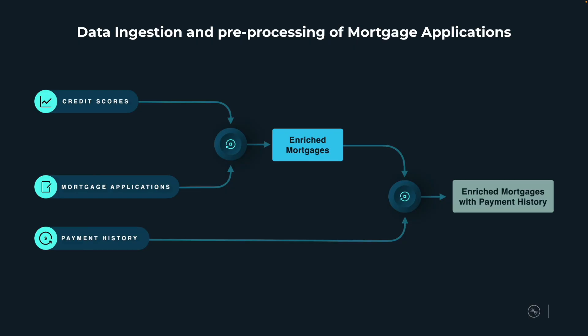We have credit score information on the applicants applying for mortgages, historical payments for each applicant and whether the payment was successful, and a live stream of mortgage applications. We'll use Flink to turn this live stream into a real-time contextualized data product — first enriching it with credit score information, then further enriching it with payments to feed our AI agents.